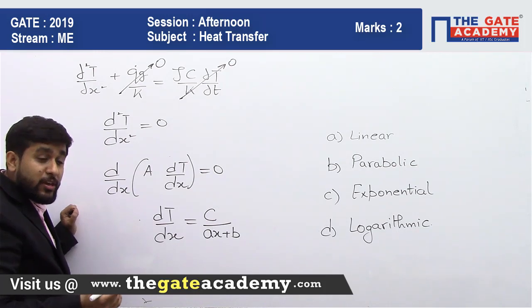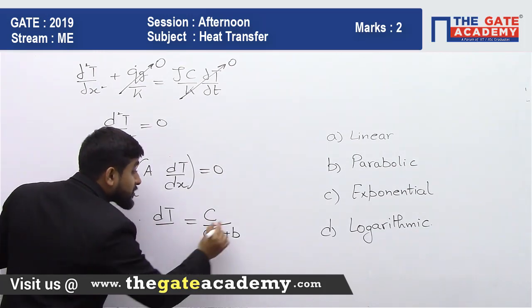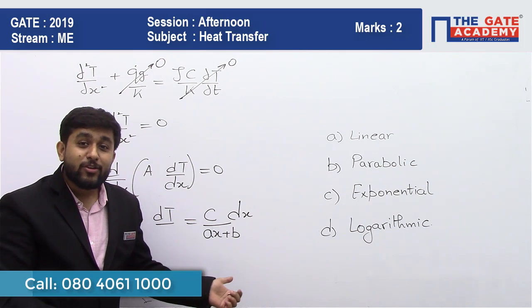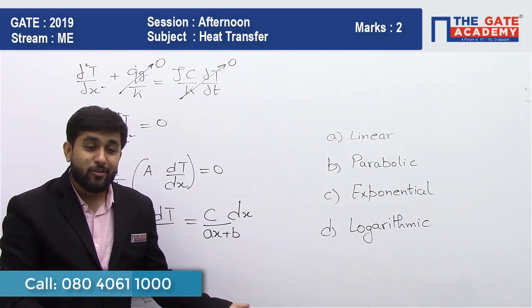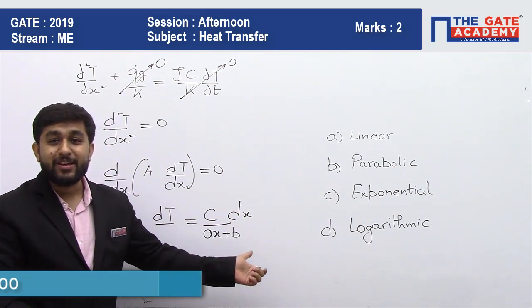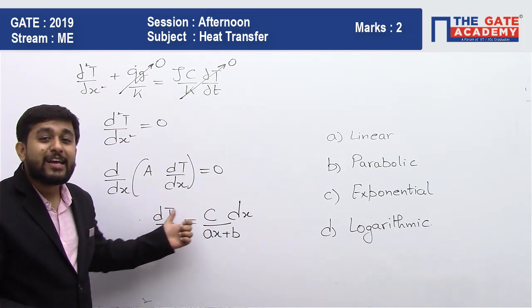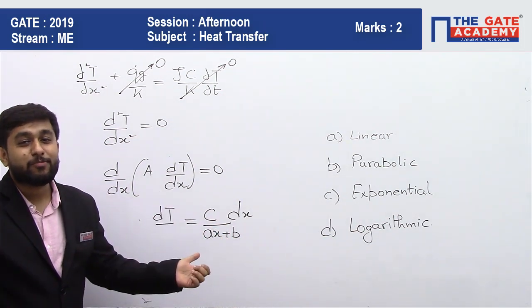Now if you use the variable separable form, your dx will go on the other side. Now on taking the derivative, you will get a logarithmic function, log of ax plus b. So what is your temperature profile t as a function of x? That is a logarithmic function.